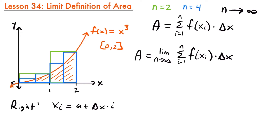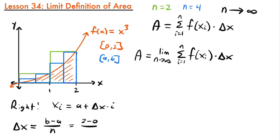Now we need to figure out what delta x is equal to, because it appears both in the sum and in our calculation for x sub i. Delta x equals b minus a divided by n, where a and b correspond to the bounds of our interval. So a equals 0 and b equals 2, giving us 2 minus 0 divided by n, which equals 2 divided by n. We keep n as a variable since we're taking the limit as n approaches infinity.